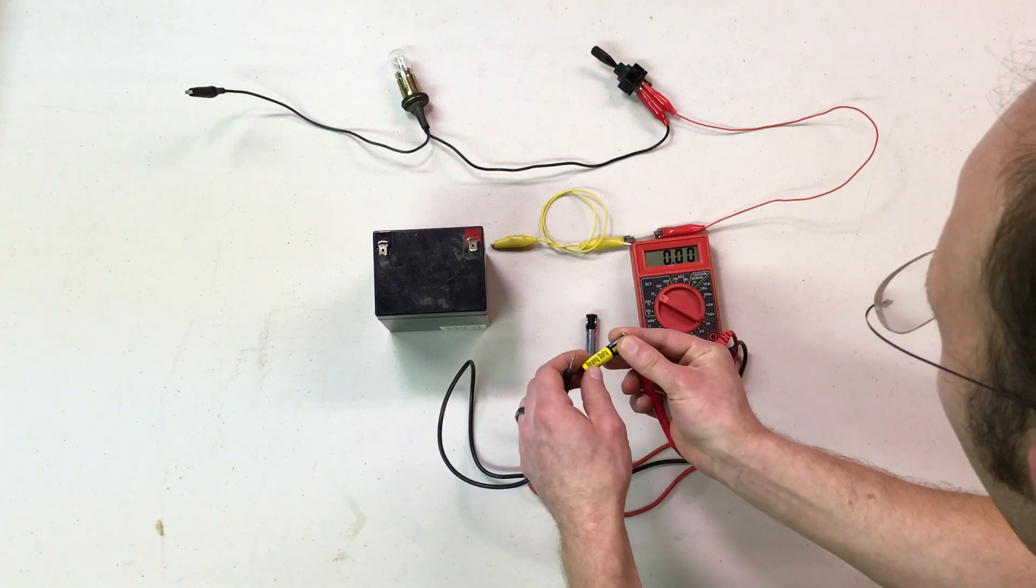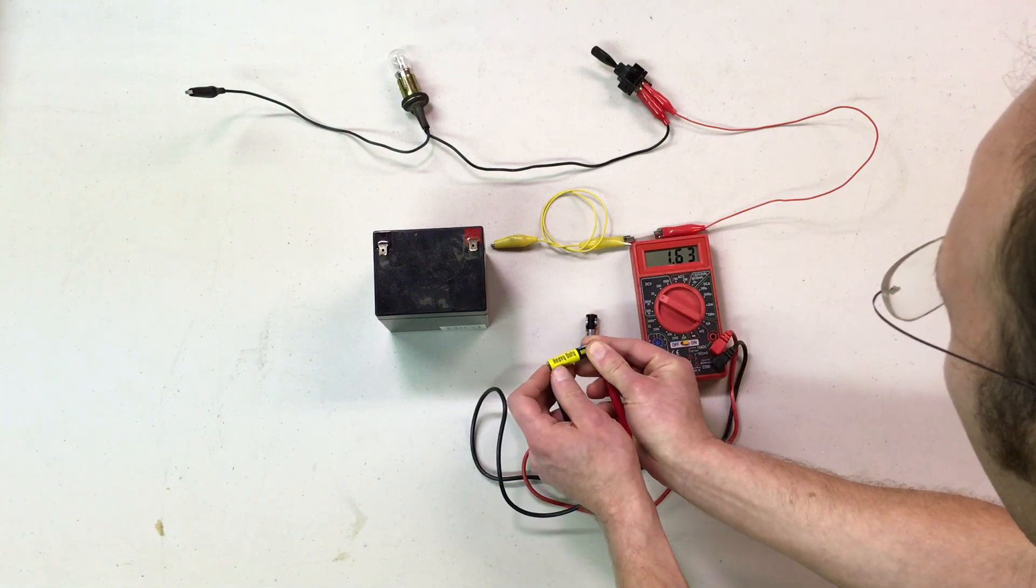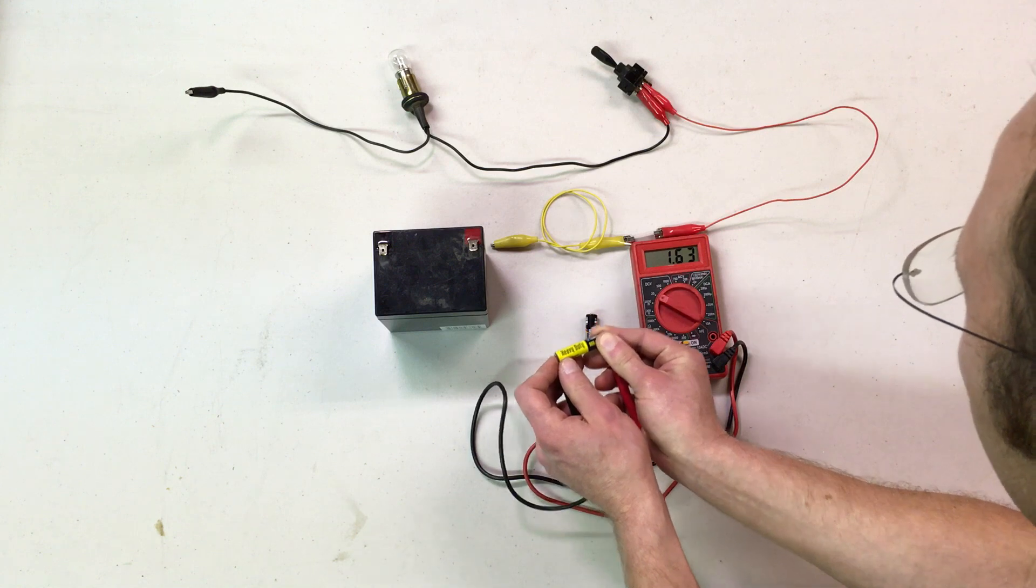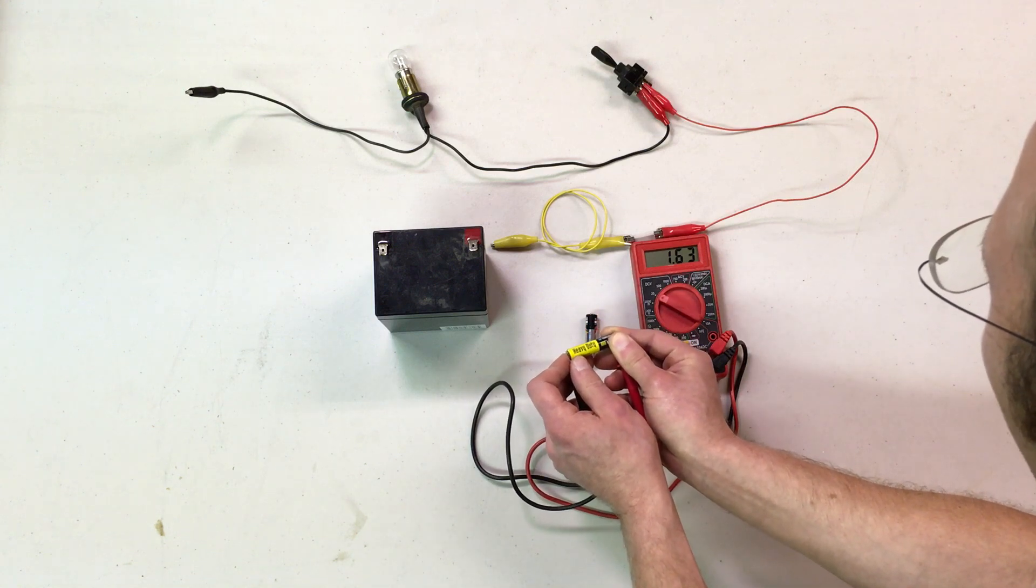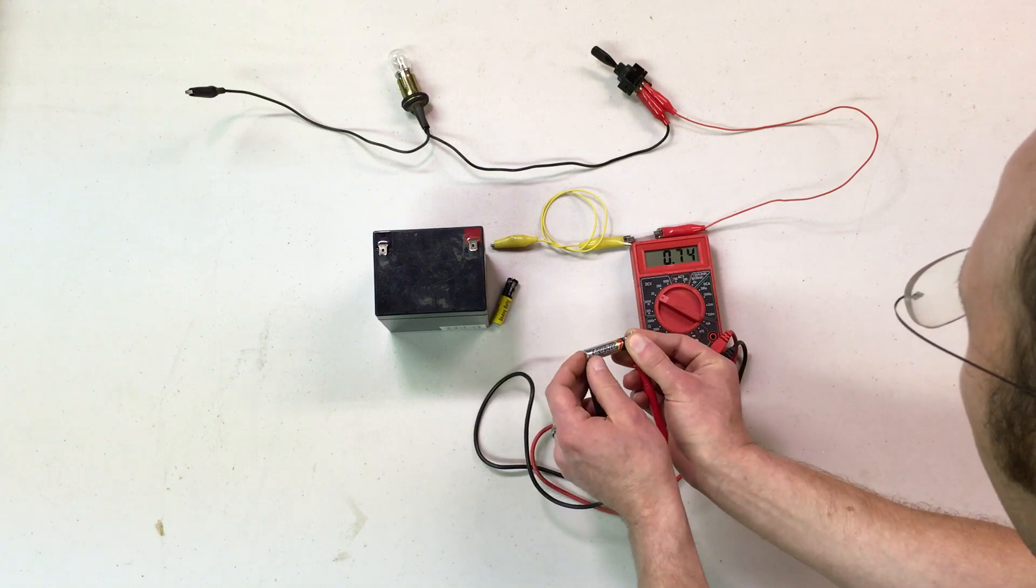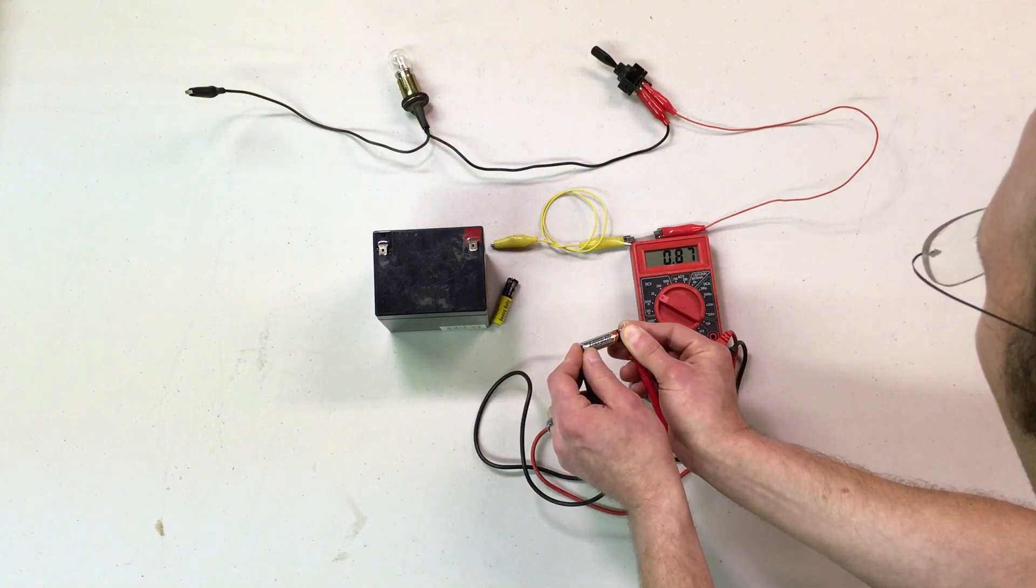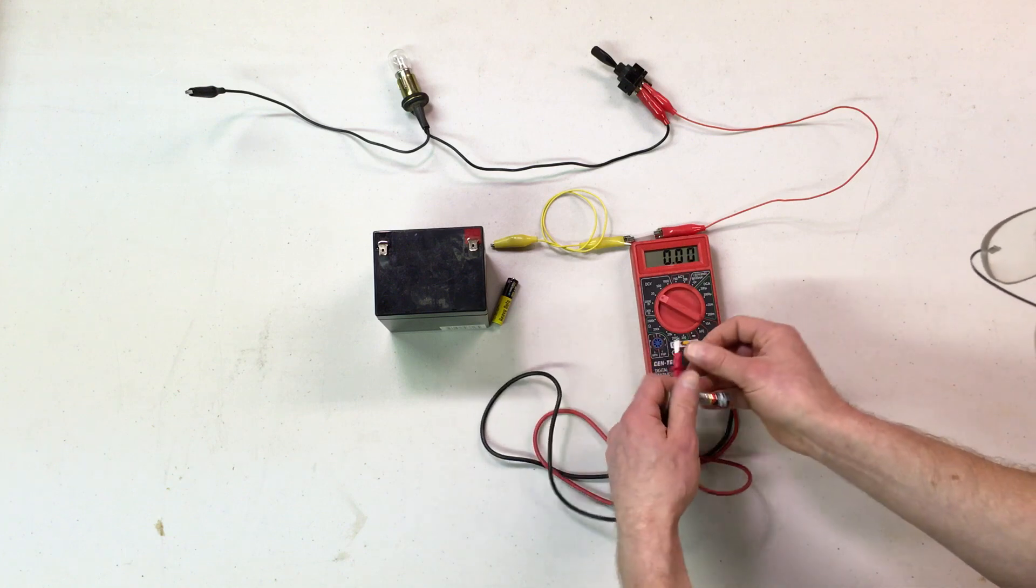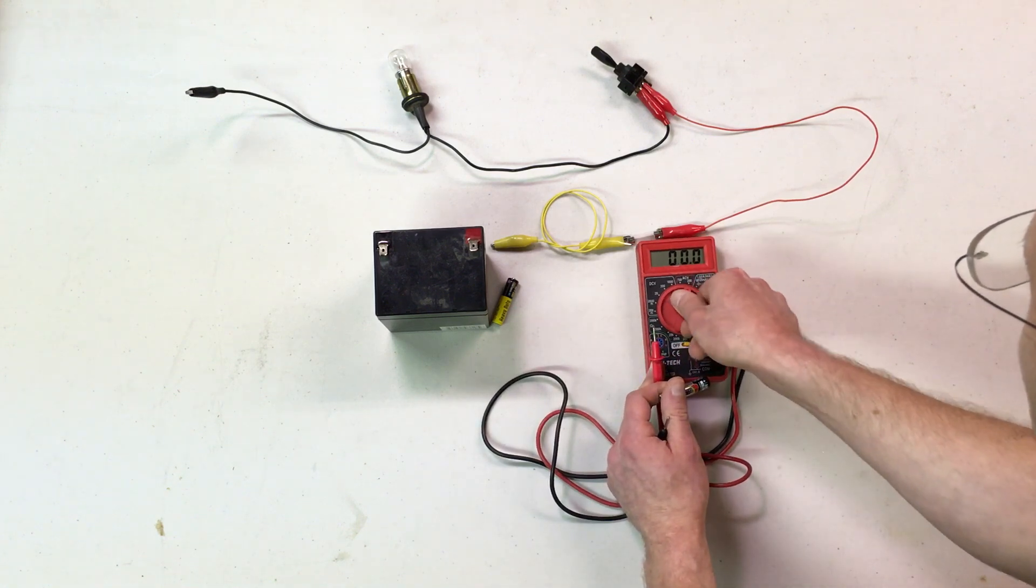I'm going to check this little alkaline one and a half volt battery. That's actually very charged, it's 1.63. Here's a low battery, 0.86, that's quite dead.